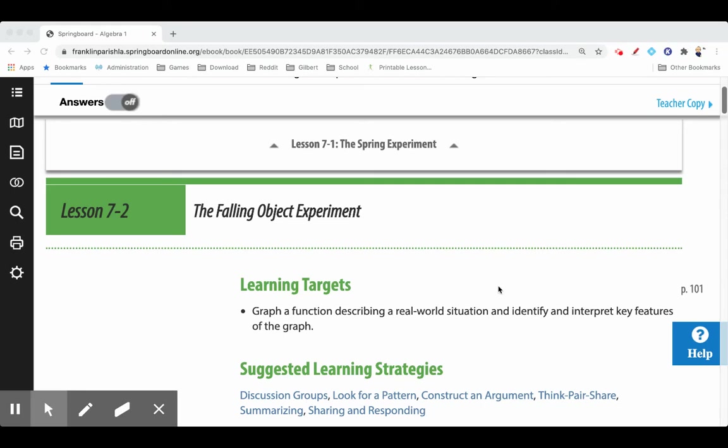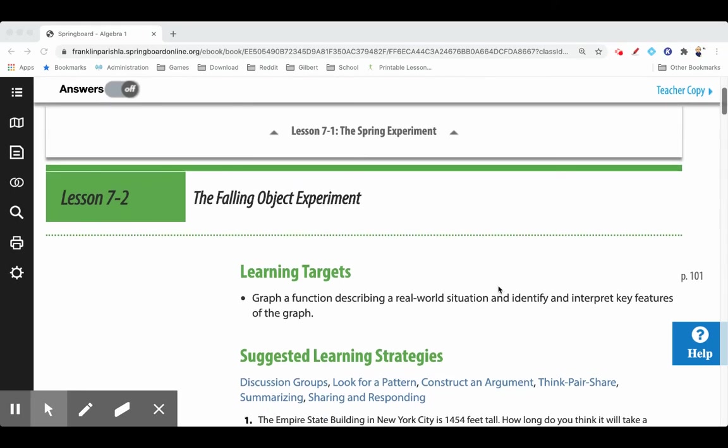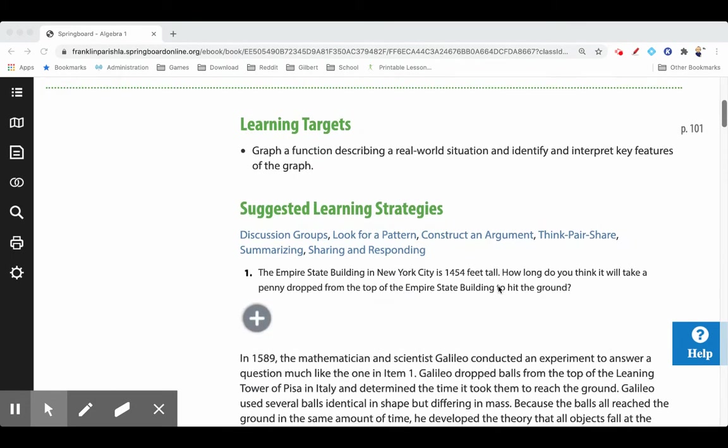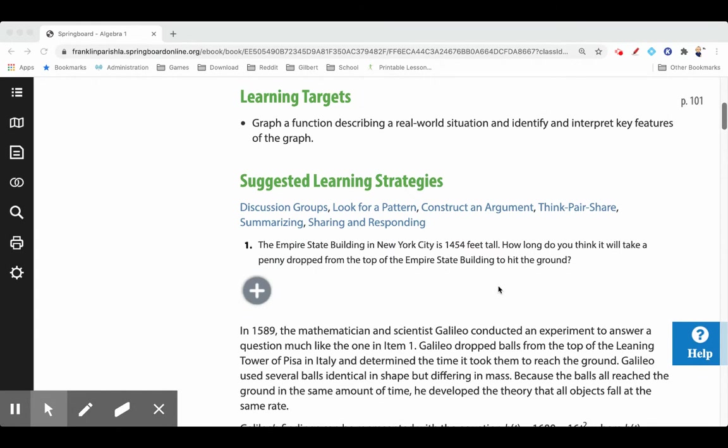Let's look at the following object experiment as we continue looking at graphs and key features such as domain, range, y-intercept, min, and max. The first question wants you to just take a guess: The Empire State Building in New York City is 1454 feet tall. How long do you think it will take a penny dropped from the top of the Empire State Building to hit the ground?